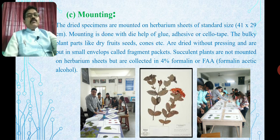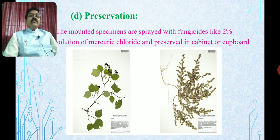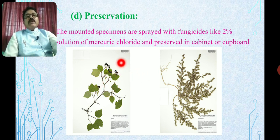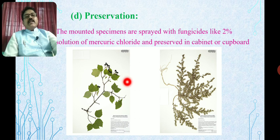Next is preservation, which is very important. The mounted specimens are sprayed with a fungicide like two percent solution of mercury chloride (HgCl₂) and preserved in a cabinet or cupboard. These are two different samples of plants that are well pressed and mounted on the sheet, showing how to paste and preserve them on the herbarium sheet.